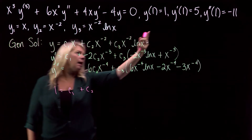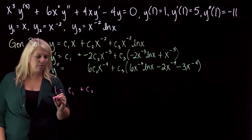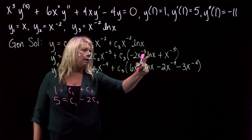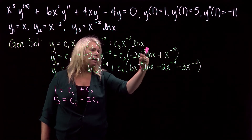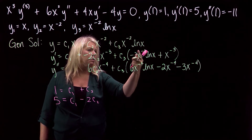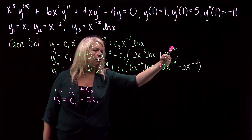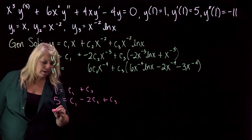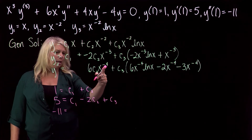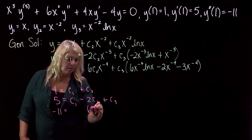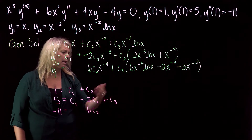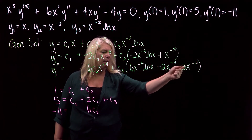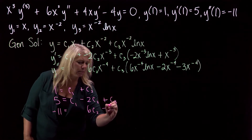For the second initial condition, y prime equals 5: 5 equals c1 minus 2c2 plus c3. For y double prime equals negative 11: we get 6c2, and since ln of 1 is zero that term vanishes. The remaining terms give minus 2 and minus 3, so minus 5 times c3. This gives us our system of three equations.